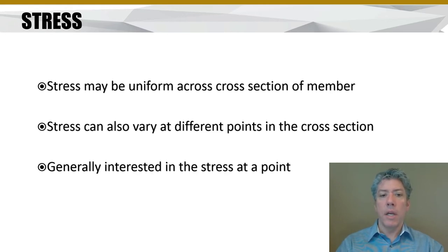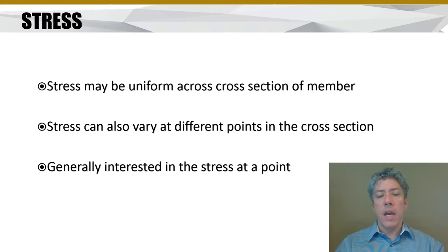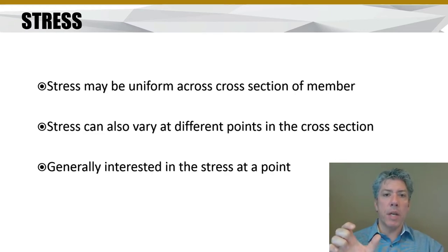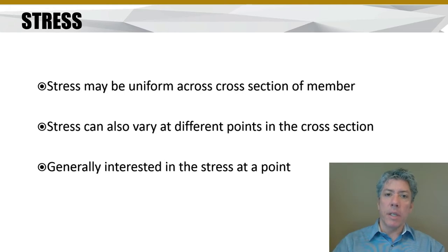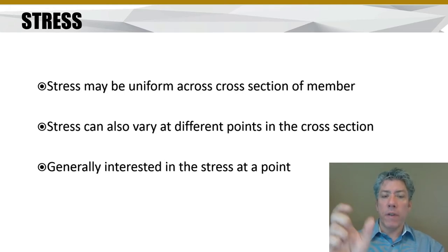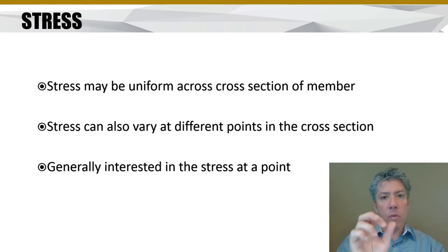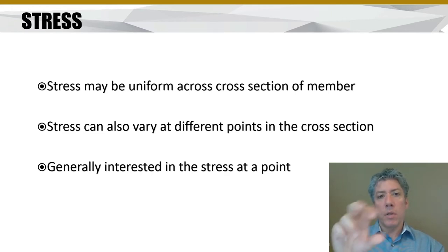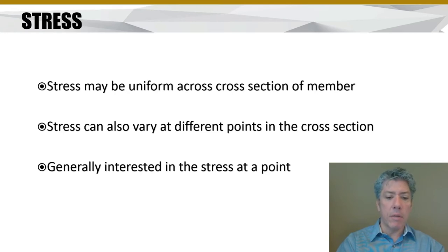We are generally interested in stress at single points. If we can find points where there is a maximum stress and we know what the material is, we can tell whether or not the member will start to fail in that area. It only takes stress at one point that overcomes the material to potentially cause a cascading effect and make the rest of the material fail.